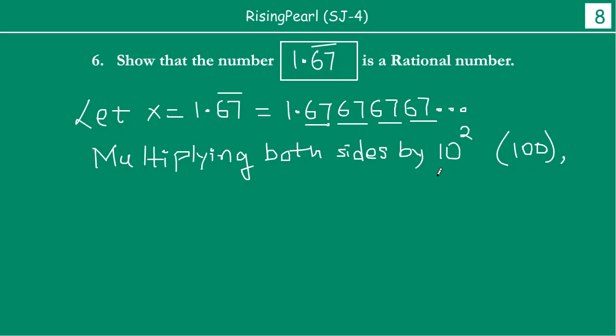So when we multiply, what do we get? We get 100x equal to this number, which is 1.676767... and so forth. You are multiplying this number by 100.